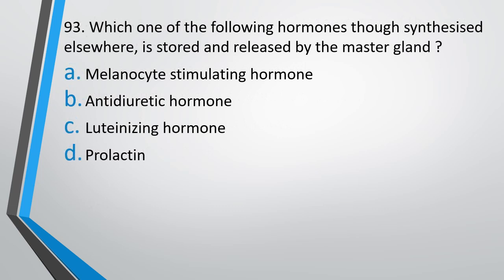Question number 93. Which one of the following hormones, though synthesized elsewhere, is stored and released by the master gland? Melanocyte stimulating hormone, anti-diuretic hormone, luteinizing hormone, or prolactin? The correct answer is anti-diuretic hormone, also known as vasopressin — synthesized by the hypothalamus but stored and secreted by the pituitary gland.